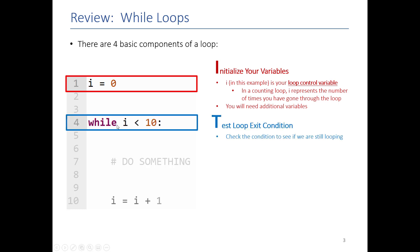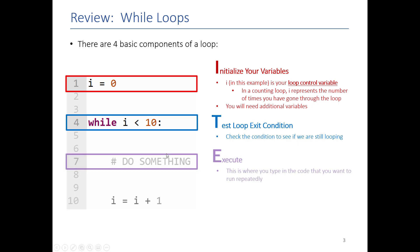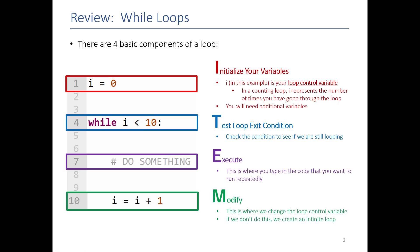In the test phase, we're checking that loop control variable — here we're checking to see if it's less than 10. If it's true, we are going to do what's in the loop; otherwise we are done. In execute, this is where we add the code that we want the loop to do over and over. In the modify phase, we adjust the value of the loop control variable — here we're adding one to i, and when we go back we check the new value of i and decide if we need to keep looping.